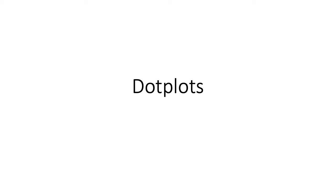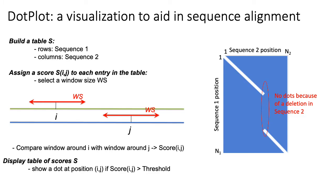I want to introduce you to the concept of dot plots for visualizing sequence alignments. A common tool for helping visualize sequence alignments, and in particular genome sequence alignments, is the dot plot. The idea of a dot plot is shown on the right, where it's basically a heat map where the rows are the different positions of sequence one and columns represent the different positions of sequence two.